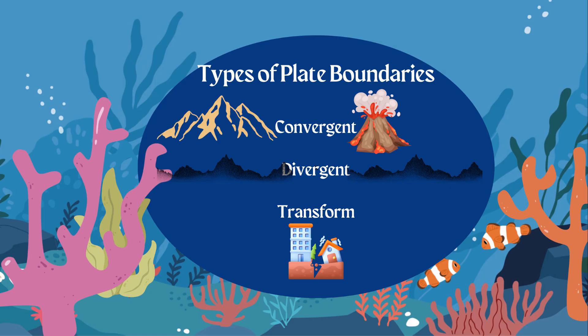At a convergent boundary, mountain ranges form when two plates pile on top of each other. We can also see volcanoes because of a subduction zone — that's when one plate slides under the other, puncturing the mantle and allowing magma to release from a volcano. So convergent boundaries give us mountain ranges and volcanoes, primarily land examples.